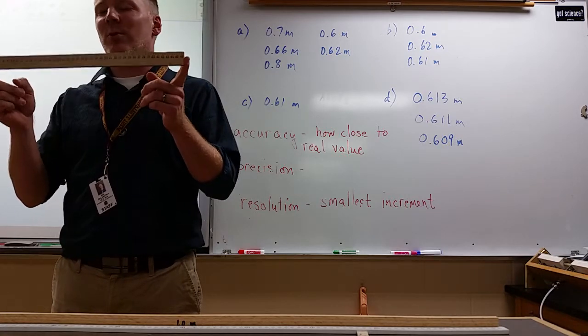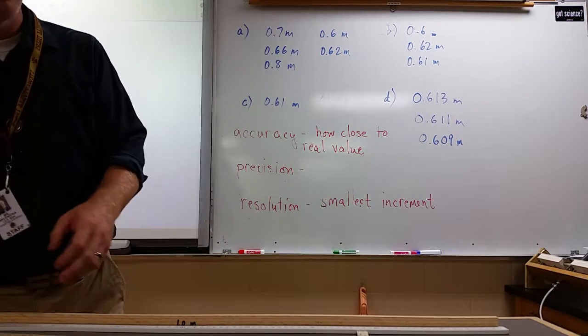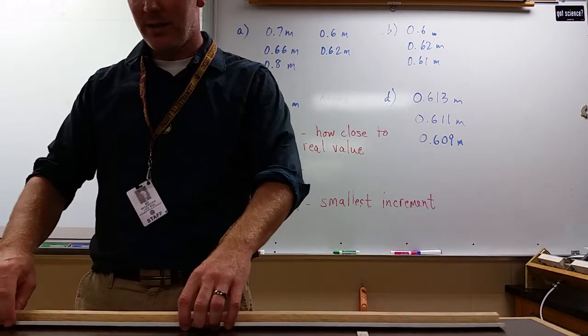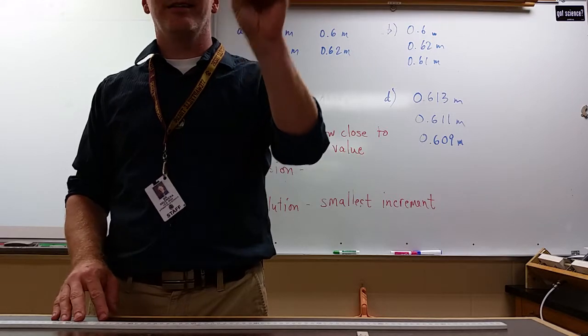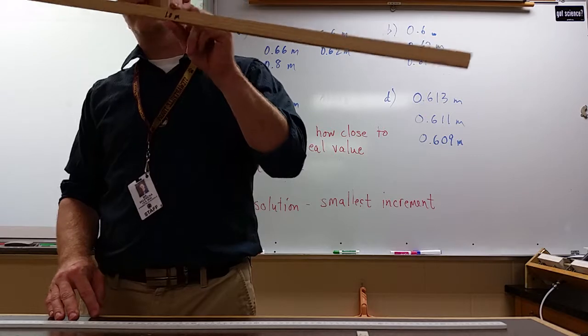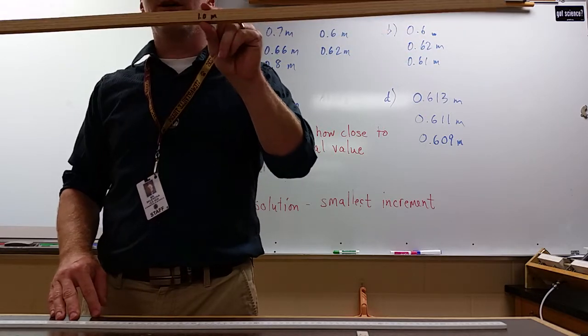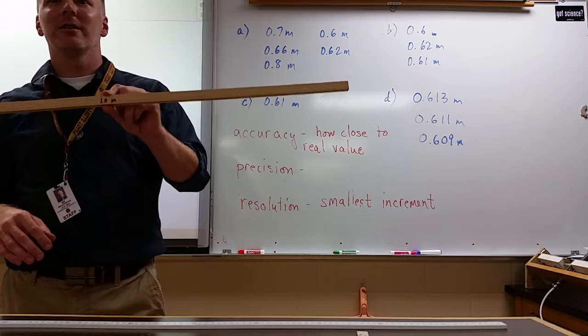So accuracy also plays into is our measurement device worth anything at all. So that's a real concern. We usually trust our measurement devices. I gave this to you and you trusted that it was 1.0 meters and it is because I'm not trying to fool you. But that's potentially a problem, especially if something if we're measuring something that we don't have good knowledge of. We basically all know about how far a meter is, so you can say yeah, this is probably right.